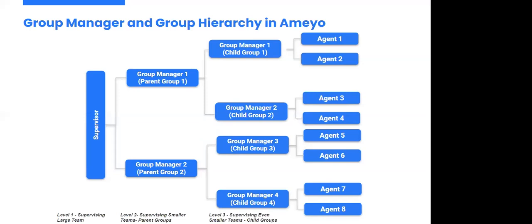The group manager can also access the callback and call details pages of agents in his group. He'll be able to schedule callbacks for agents in his group and see call details for activity in his group. Now that we understand the role of a group manager, let's proceed to group hierarchy. Suppose there's a multinational company with a large number of employees divided into larger teams. These are further divided into smaller teams to ensure multi-level monitoring and supervision, so we can have a granular view of all activities happening in the groups.